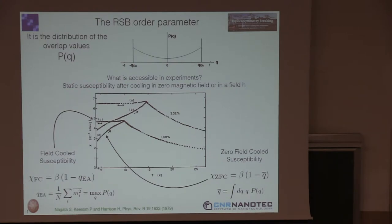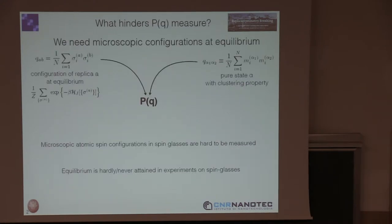Actually, replica symmetry breaking is one way to explain the differences between these two measurements. Yet, we cannot know the rest of the distribution. What hinders the measurements is that we need to access microscopic atomic spin configurations, and that is very hard to measure for large numbers of spins in spin glasses.